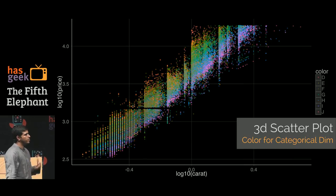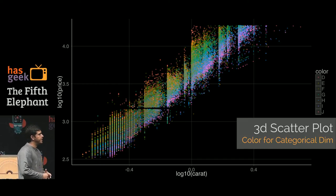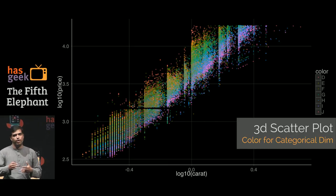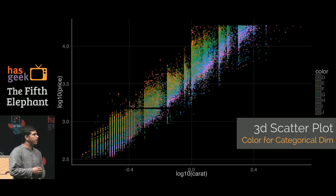The other option is color. If we use color for the color variable in the data set, you can clearly start to see the pattern. The D color, which are the good ones, are on the top, orange ones and the pink ones, which are the J colors, are on the bottom. You can clearly see lines and levels there. Color is the best way, or one of the other ways, to look at the third dimension.